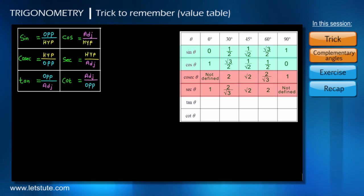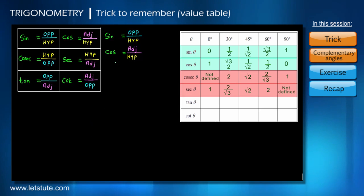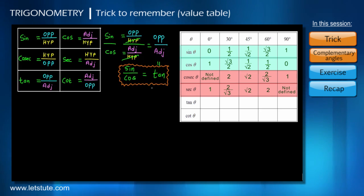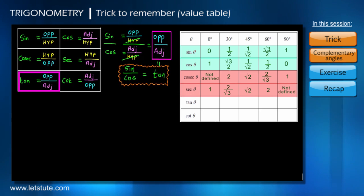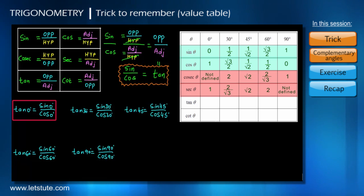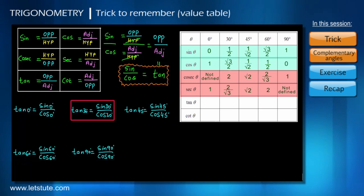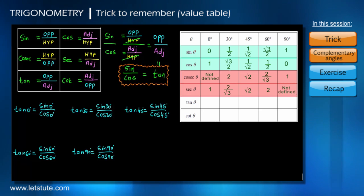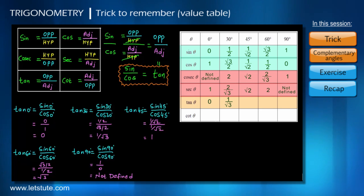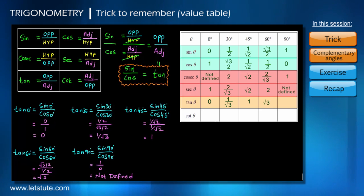Now to know the values for tan, we see that when we take the ratio of sine and cosine we get tan. So tan equals sine upon cosine. This gives us tan 0° as 0, tan 30° as 1 upon root 3, tan 45° as 1, tan 60° as root 3, and tan 90° as not defined.